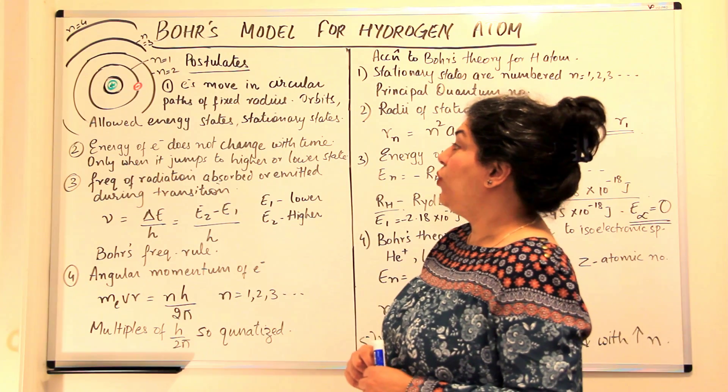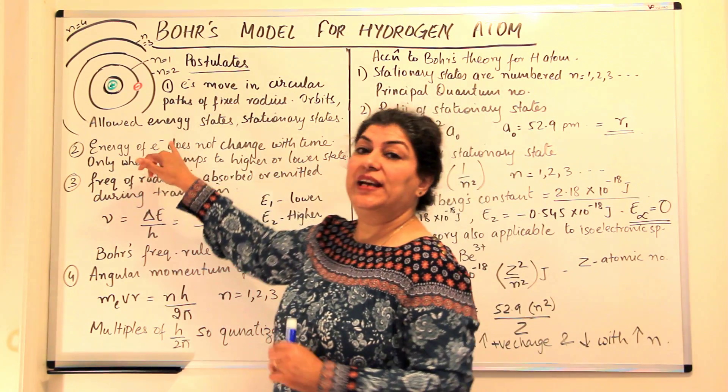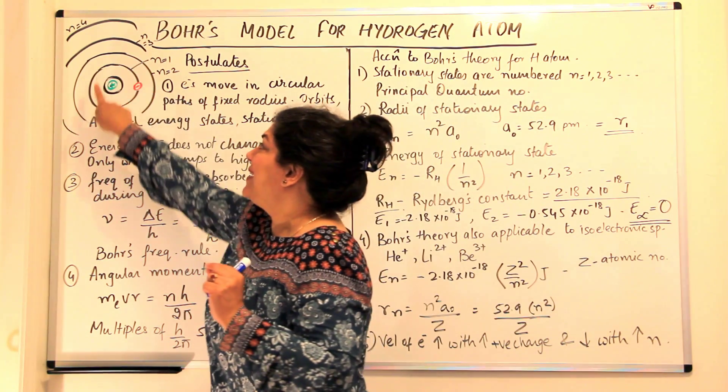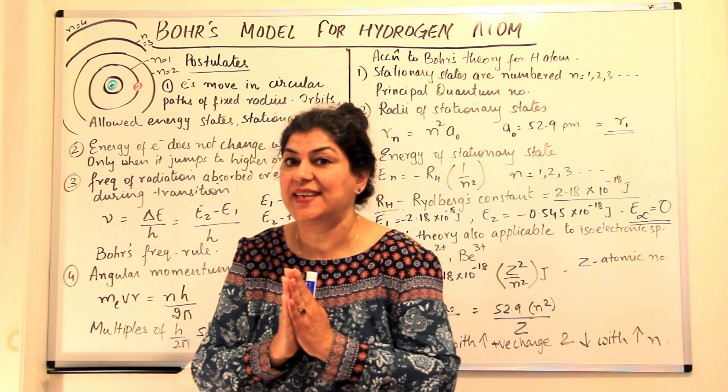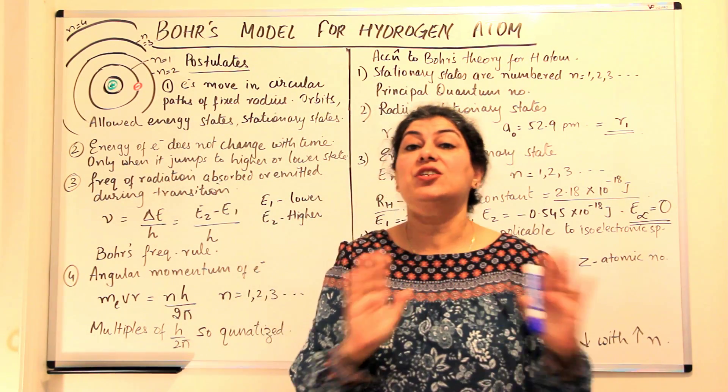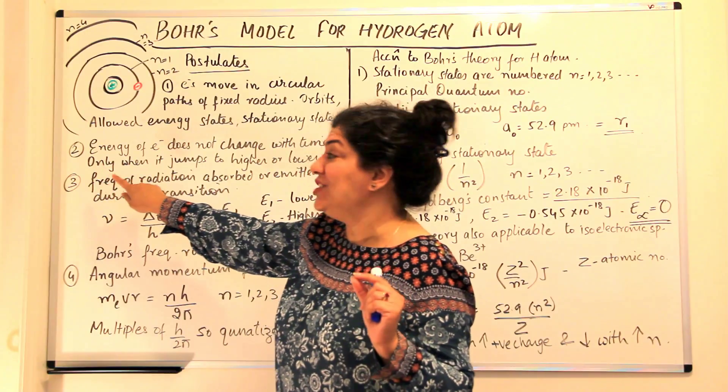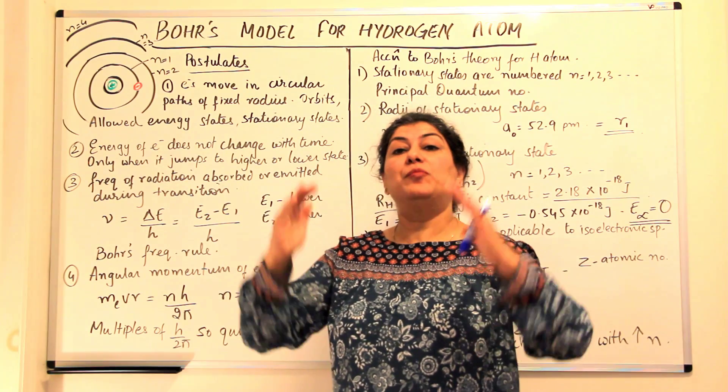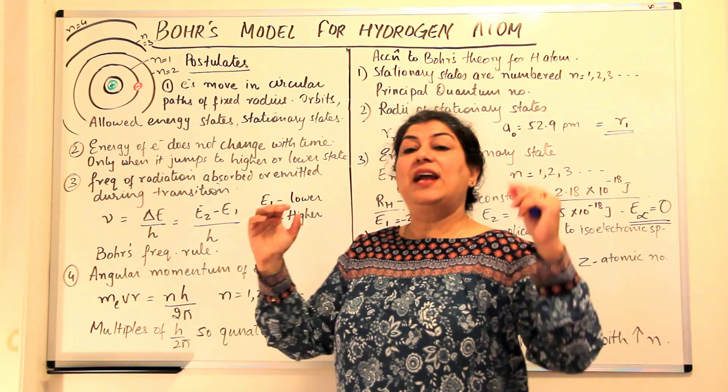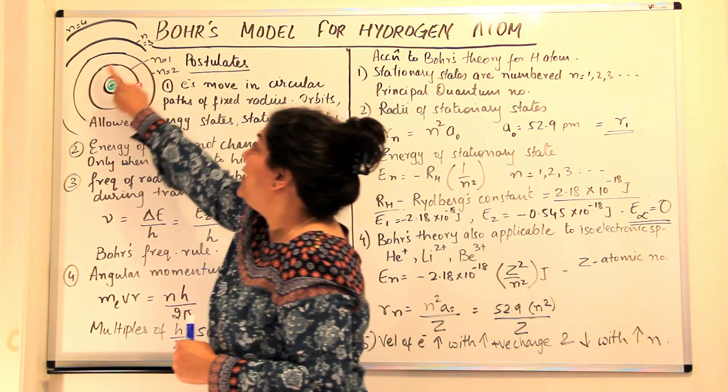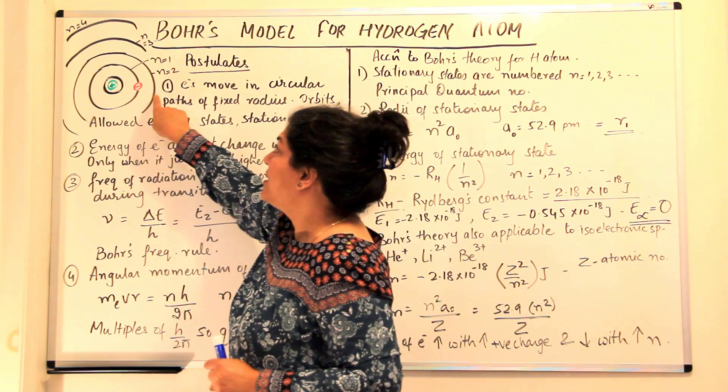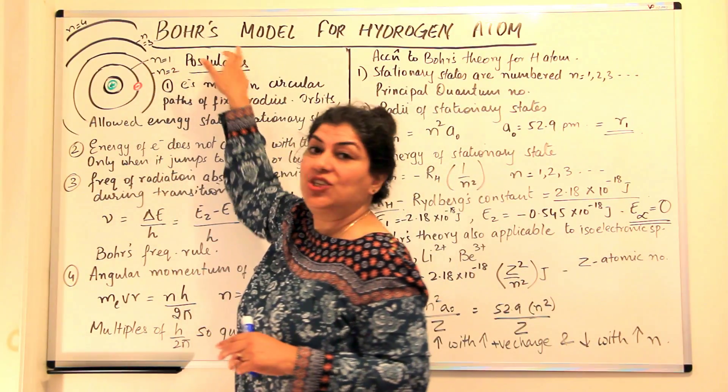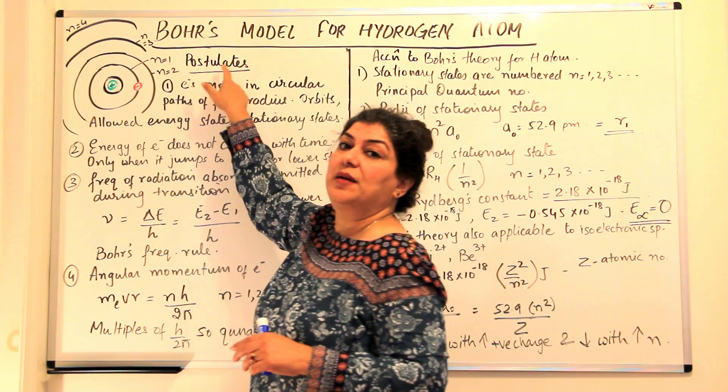The second postulate was that the energy of an electron does not change with time. As long as the electron is present in one stationary state, its energy does not change. It only changes when it jumps to a higher or a lower state. Since there are more than one energy states and we talked about quantization, the energy levels are not continuous. They are fixed allowed energy states. And since these are quantized, only certain energies are allowed. So some energies are higher and some are lower.